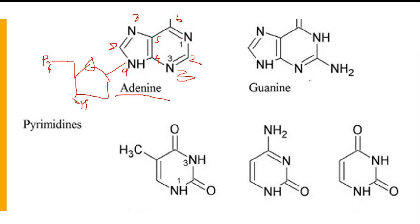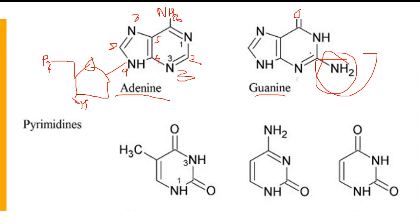Guanine has the same purine structure but with an additional amino group and oxygen. Adenine can be named as 6-aminopurine, because on the sixth carbon there is an amino group. Guanine is known as 2-amino-6-oxypurine because on the second carbon there is an amino group and on the sixth carbon there is an oxygen.